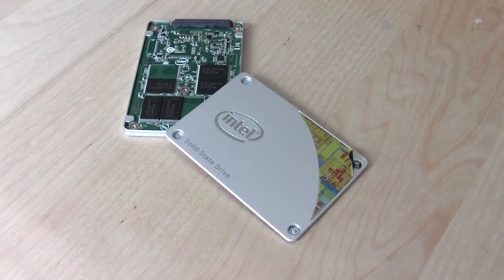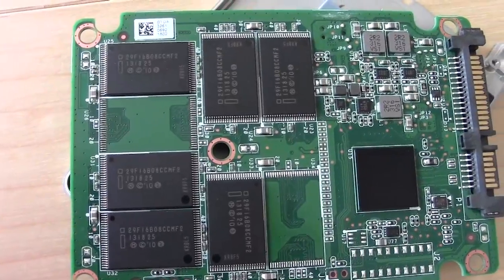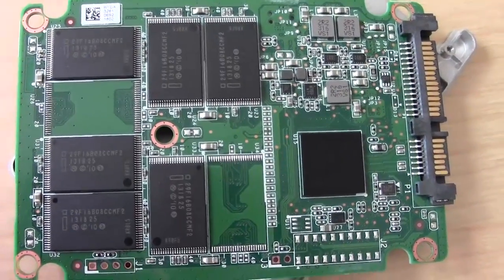However, on the inside there have been some important key changes. The most significant is the switch from Intel's 25 to their 20 nanometer NAND flash memory. This in turn has two significant impacts on the 530. One is that 20 nanometer NAND is more cost effective, which could help Intel price the 530 a little more competitively.